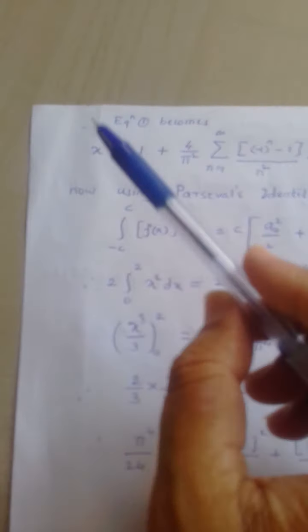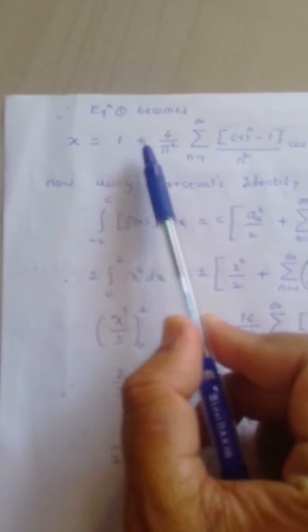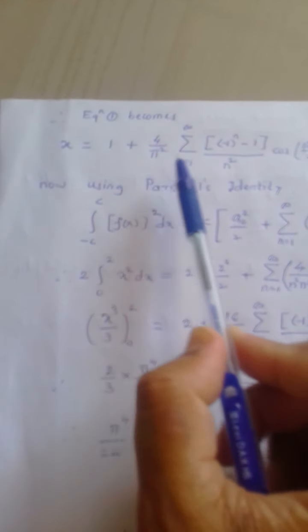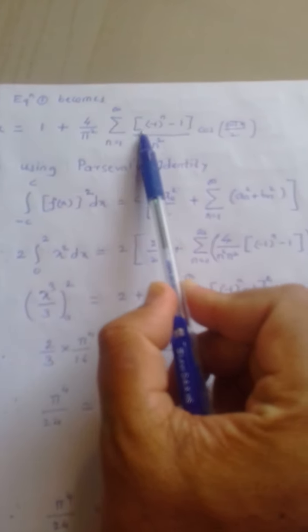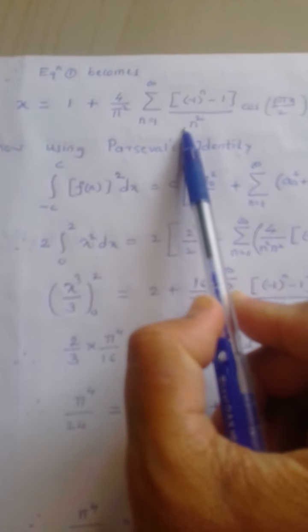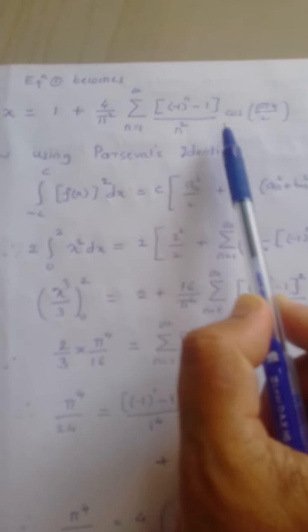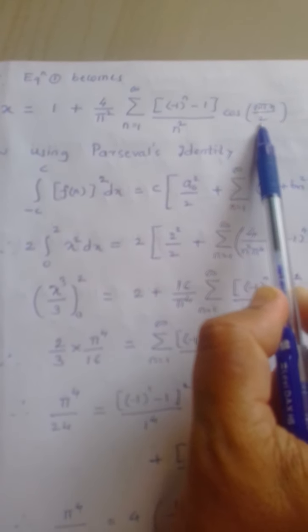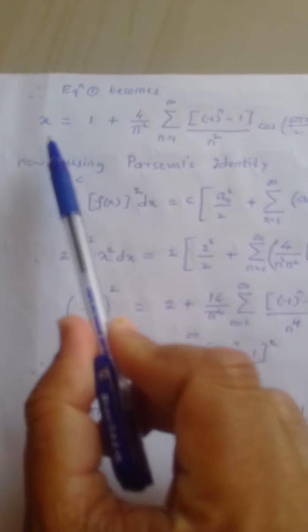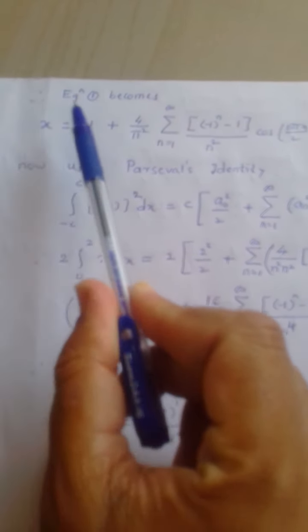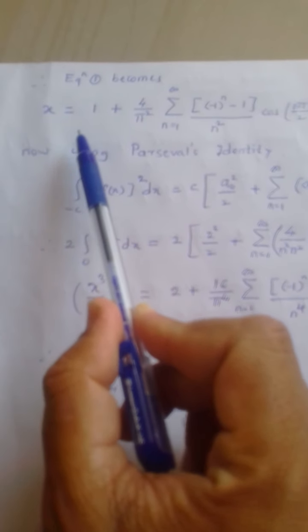Substituting the values of a₀ and aₙ into equation 1, the series becomes: x = 1 + (4/π²) × summation n from 1 to infinity of (−1)^(n−1)/n² × cos(nπx/2). This is the required half range cosine series.